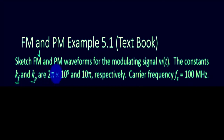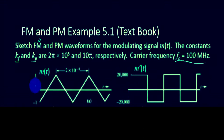Kf is 2 pi times 10 to the power of 5, whereas Kp is 10 pi respectively. The carrier frequency given to us is 100 megahertz. This is the waveform of the modulating signal M of t, and based on this along with these parameters and the carrier frequency Fc, we need to determine what the modulated waveform would be.